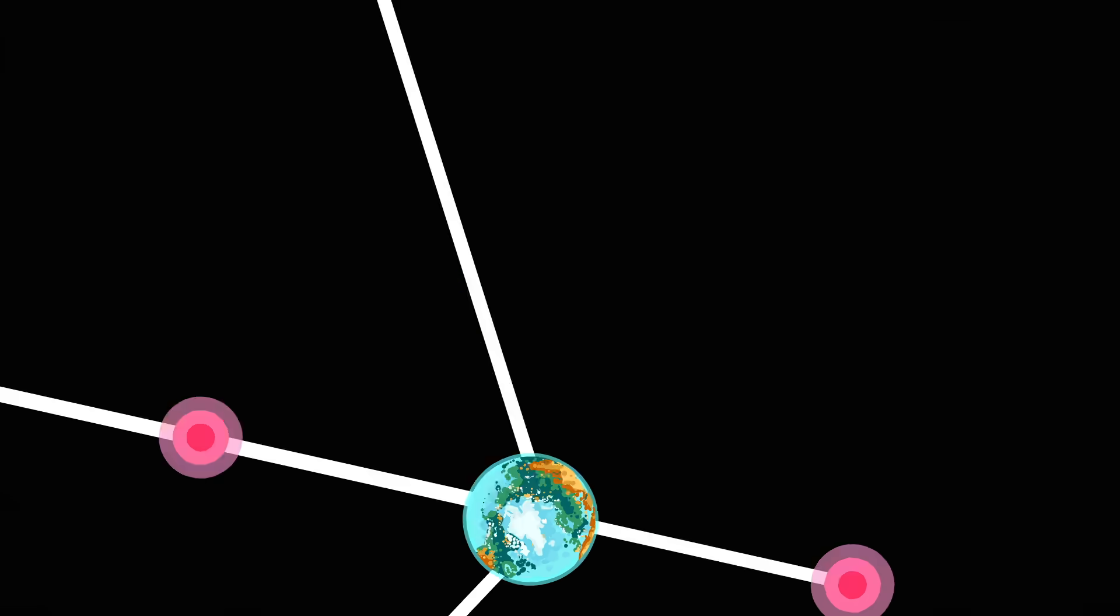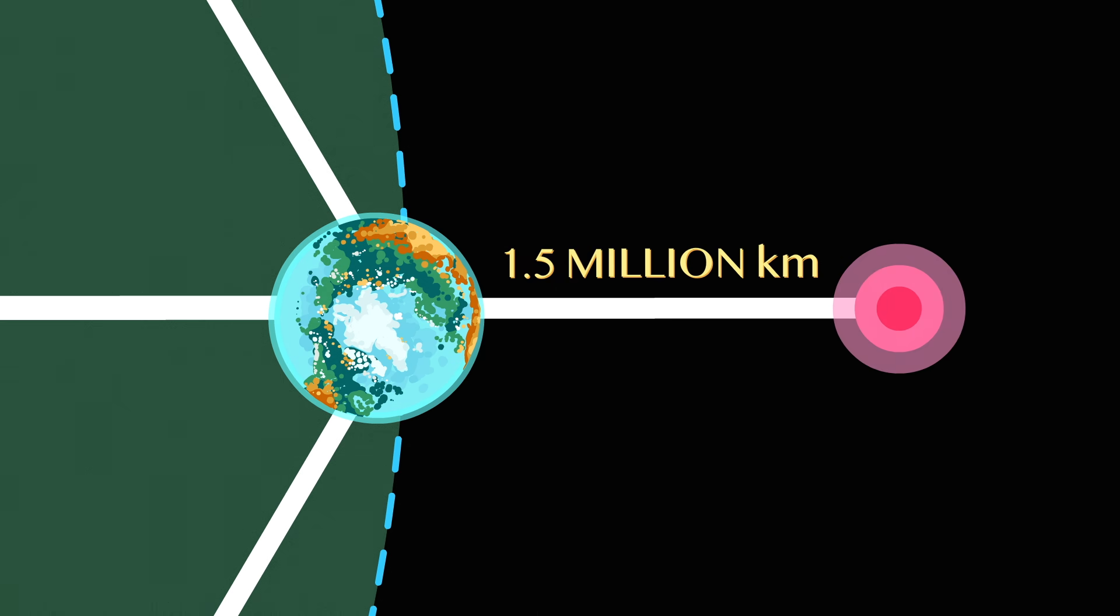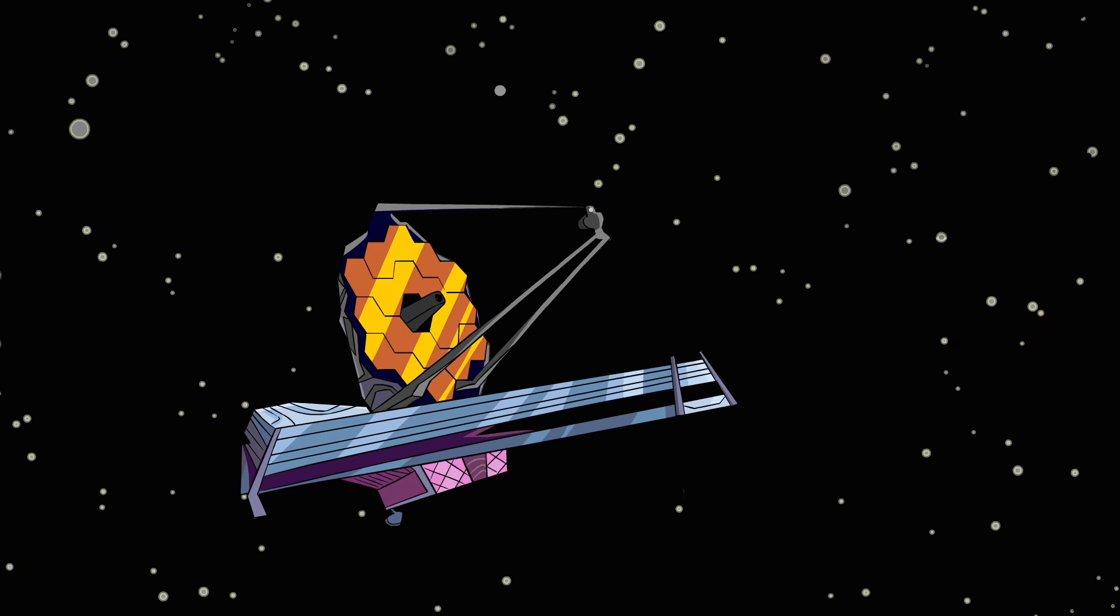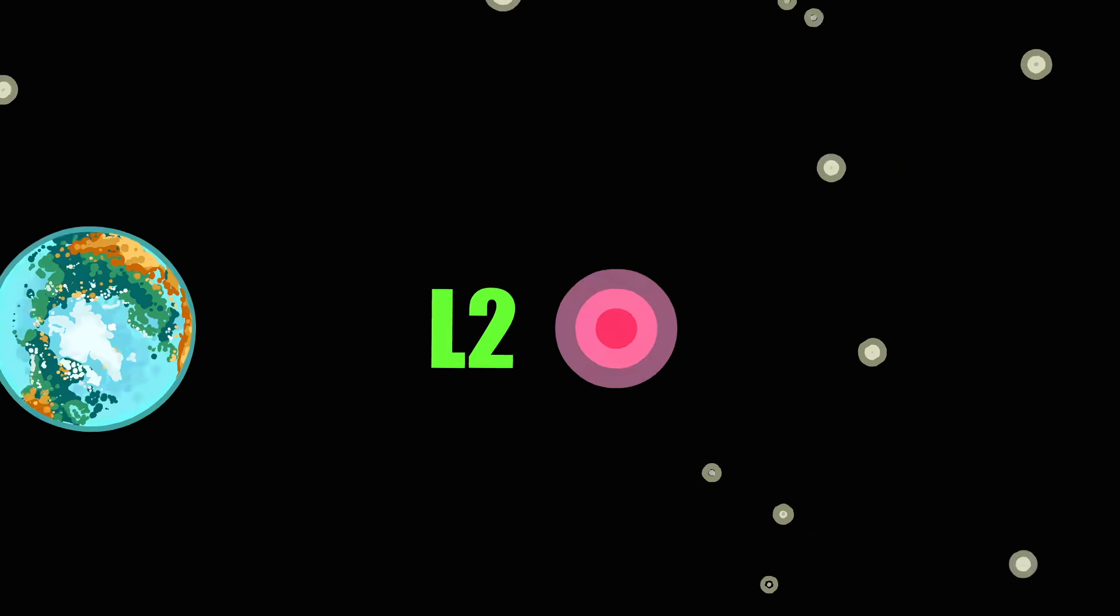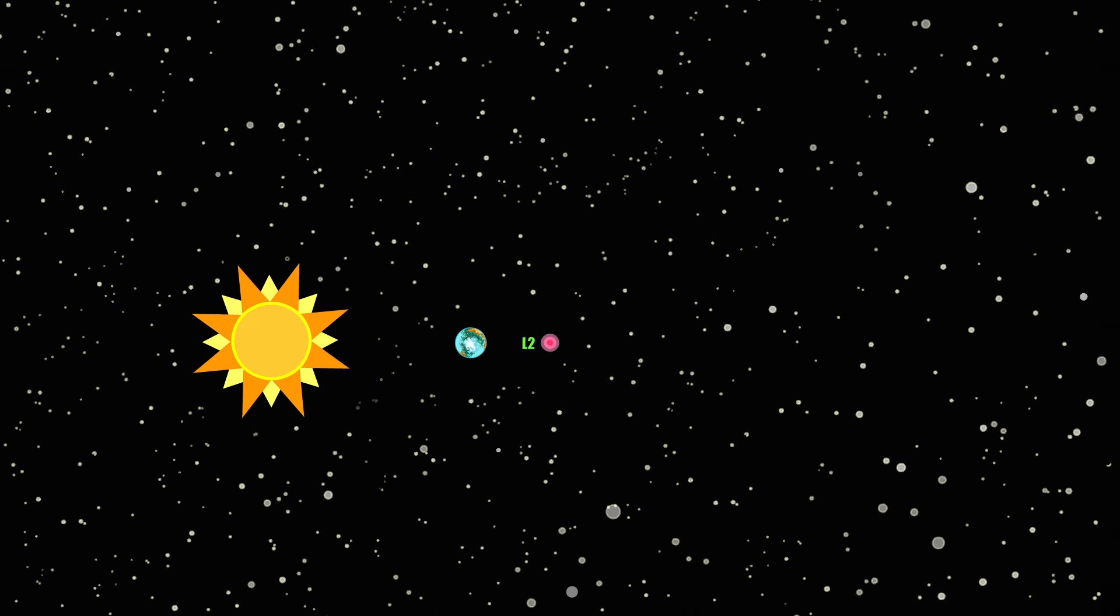L2 is at the same distance from Earth, but outside its orbit and shielded from the Sun, making it the perfect spot to observe outer space. In 2022, the James Webb Space Telescope went online here, in a spot where the Sun and Earth only occupy a tiny fraction of the sky.